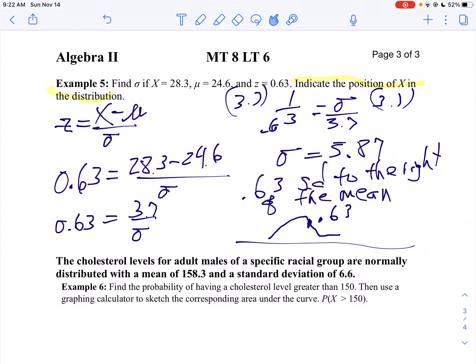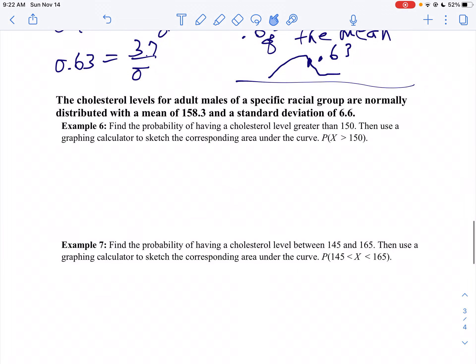Now let's take a look at another example here. It says the cholesterol level for adult males for a specific racial group are normally distributed with a mean of 158.3 and a standard deviation of 6.6. Find the probability of having a cholesterol level greater than 150. Then use the graphing calculator to sketch the corresponding area under the curve.